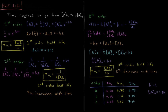For second-order reactions, the integrated rate law is 1/A(t) equals 1/A-naught plus kt. Substituting A(t) = (1/2)A-naught for the half-life time, 1 over (1/2)A-naught equals 2/A-naught. So 2/A-naught equals 1/A-naught plus kt. Subtracting 1/A-naught from both sides: 2/A-naught minus 1/A-naught equals 1/A-naught, which equals kt. So the half-life for a second-order reaction is 1 divided by the rate constant times the initial concentration.